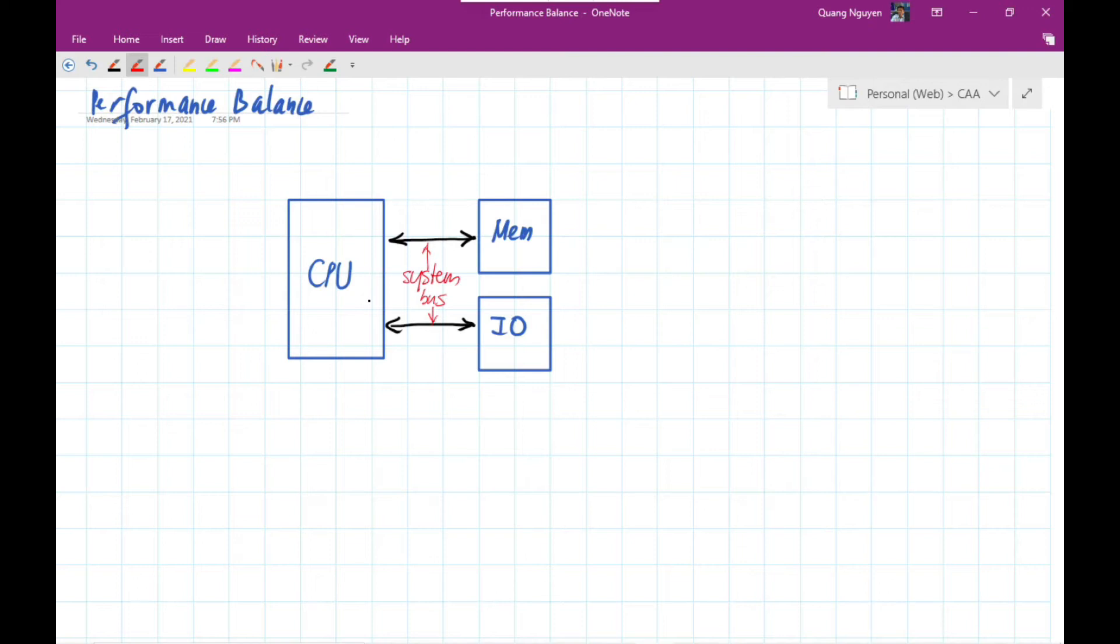The following measures are applied for the processor memory interface. The first measure is to increase the numbers of bits, that means the numbers of other lines between the CPU and the memory. That means we use a wider data bus. That means we increase the numbers of lines here. Instead of one, we use multiple lines.